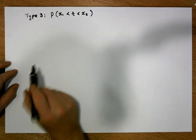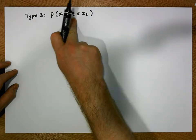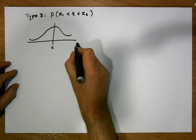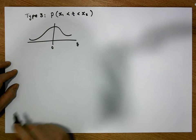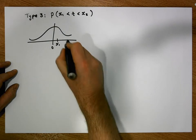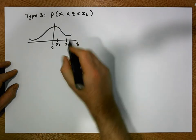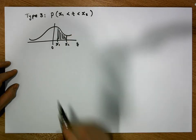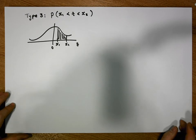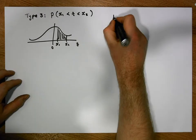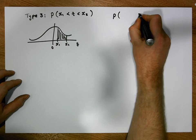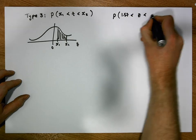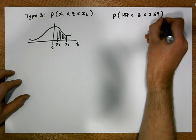What we are really interested in calculating, with respect to the standard normal distribution, is the probability of observing a z-score between two positive bounds. Let's pick the positive bounds x1 and x2. Let's look at an example — let's say we are interested in calculating the probability that a z-score is greater than 1.57 and less than 2.69.